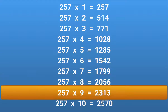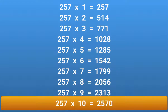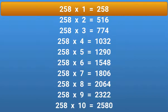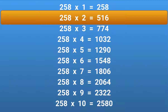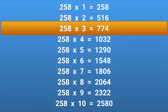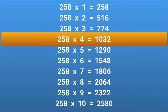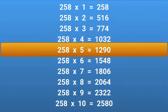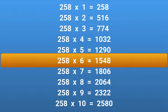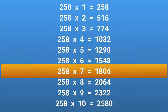257 × 10 = 2570. 258 × 1 = 258. 258 × 2 = 516. 258 × 3 = 774. 258 × 4 = 1032. 258 × 5 = 1290. 258 × 6 = 1548. 258 × 7 = 1806. 258 × 8 = 2064. 258 × 9 = 2322.